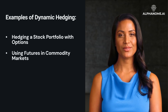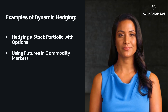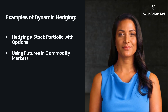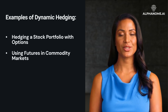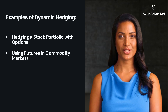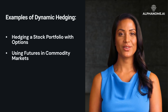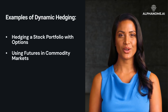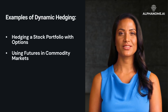Example 2: Using futures in commodity markets. Situation: an investor has a large position in crude oil. Strategy: the investor uses futures contracts to hedge against a price drop in crude oil. Adjustment: if market indicators suggest a change in crude oil prices, the investor adjusts their futures positions accordingly.